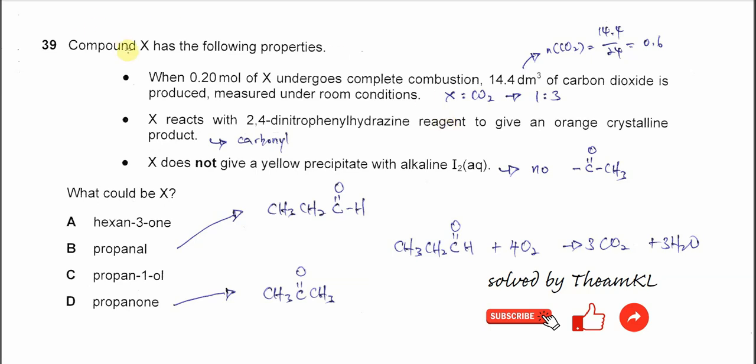Question 39. Compound X has the following properties. When 0.2 moles of X undergo complete combustion, 14.4 dm³ of CO2 is produced under room conditions.